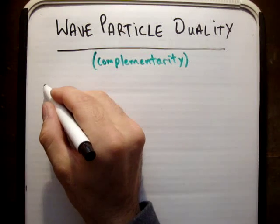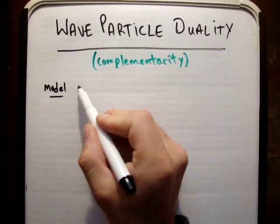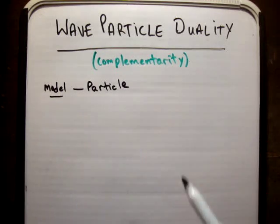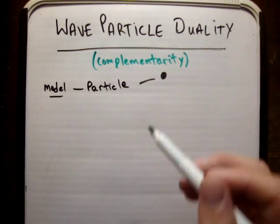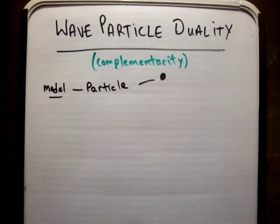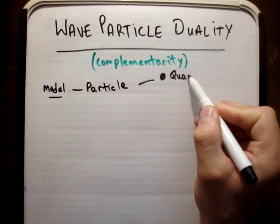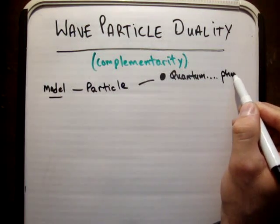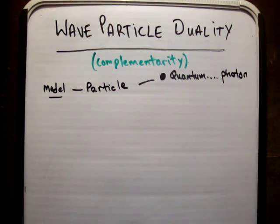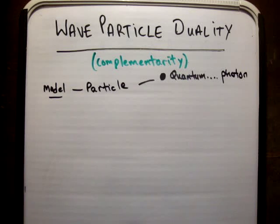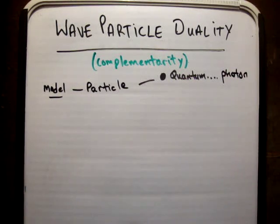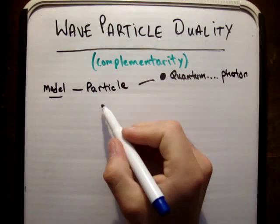But then other things started happening and we found that the model required to explain certain phenomena was that light behaved as a particle. What I mean by that is literally small packets of light — individual packets where you can only get one packet; you can't get half a packet or three-quarters of a packet. There is a minimum size of light, and we call this minimum size a quantum. The quantum of light is the photon. You can get one photon, two, three, or four, but you cannot get one and three-quarters or point-five of a photon. It behaves like a particle — like snooker balls, with collisions and velocities.